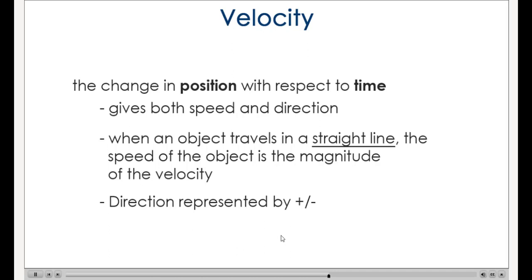When an object travels in a straight line, the speed of the object is the magnitude of the velocity. For example, the velocity of the bike rider from your house to the cupcake shop might be 10 miles per hour due east, or the velocity of a volleyball being set might be 3 feet per second upward.